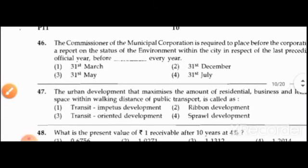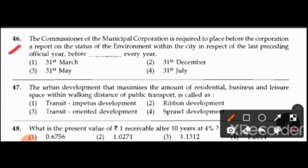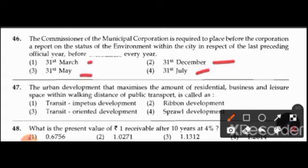Question 46: The commissioner of the municipal corporation is required to place before the corporation a report on the status of the environment within the city in respect of the last preceding official year, before a certain date every year. Options are 31st March, 31st December, 31st May, or 31st July. The right answer is 31st July.